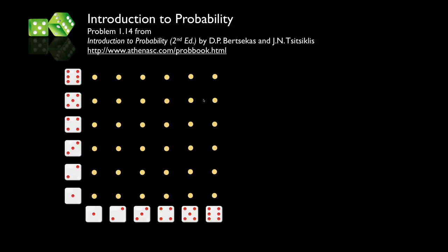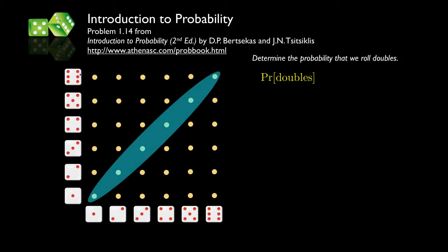One way to approach this problem is to view the sample space as a grid, with one die's outcomes on each axis, giving 36 equally likely outcomes. The ways to roll doubles are: one-one, two-two, three-three, four-four, five-five, and six-six — that's six outcomes. So the probability of doubles is six divided by 36, or one-sixth.